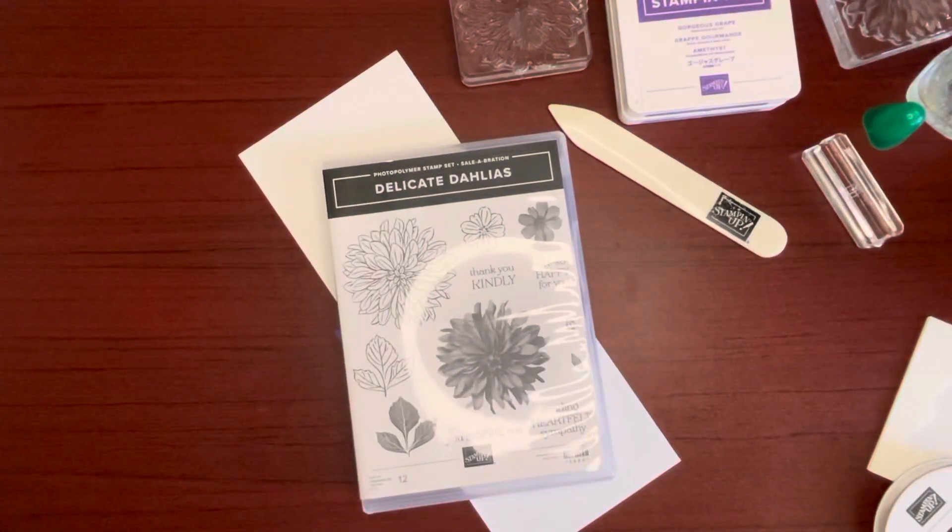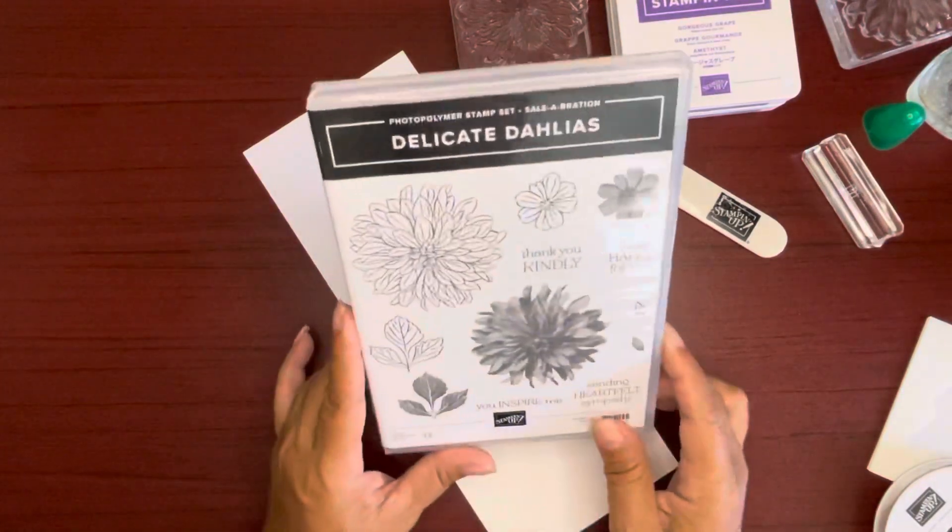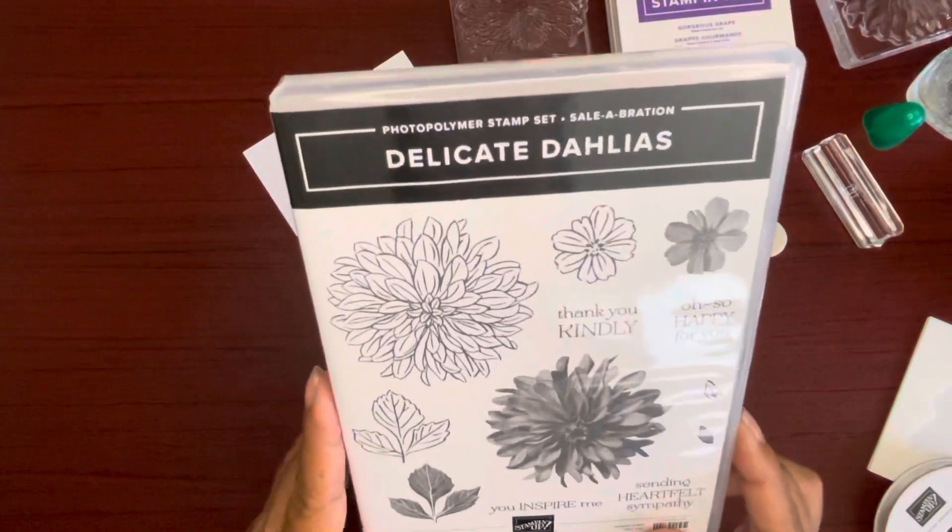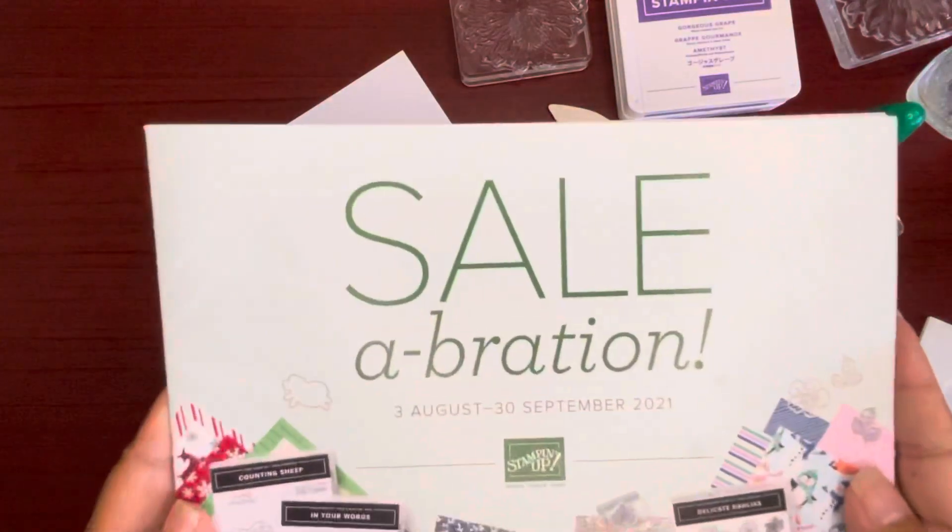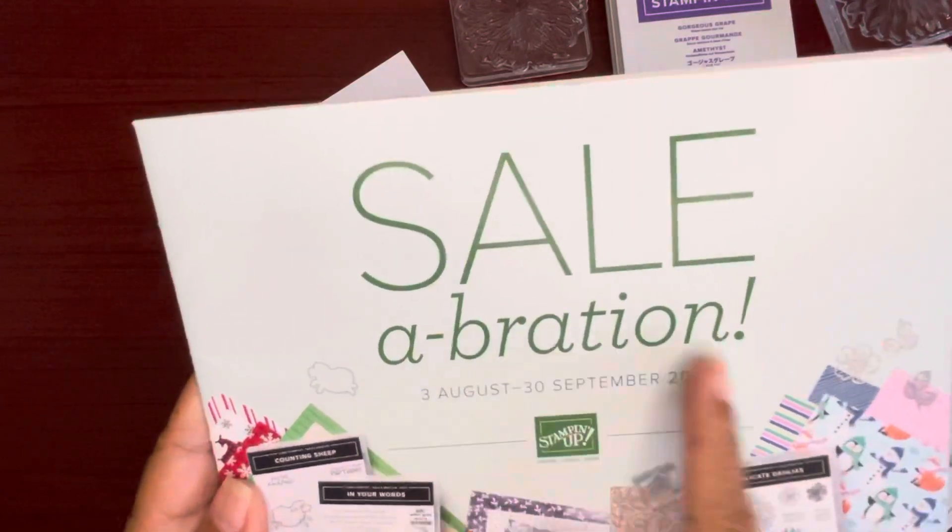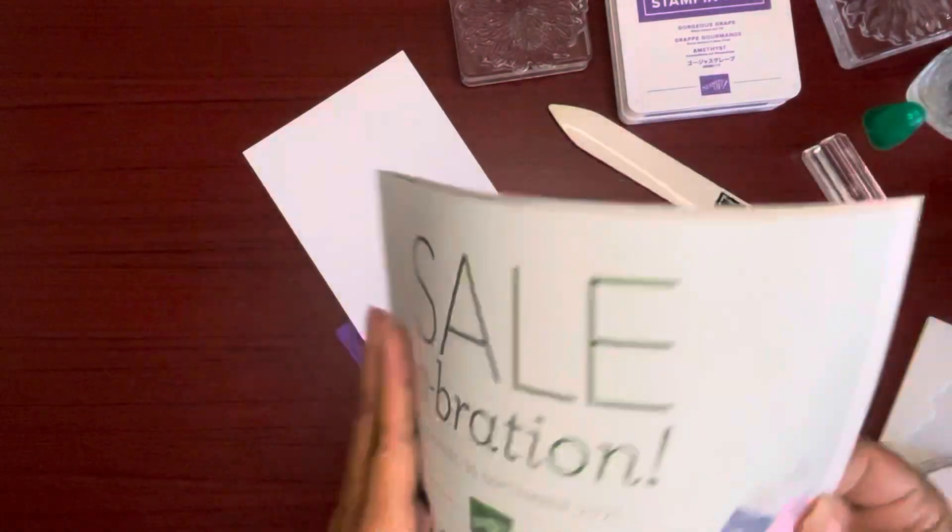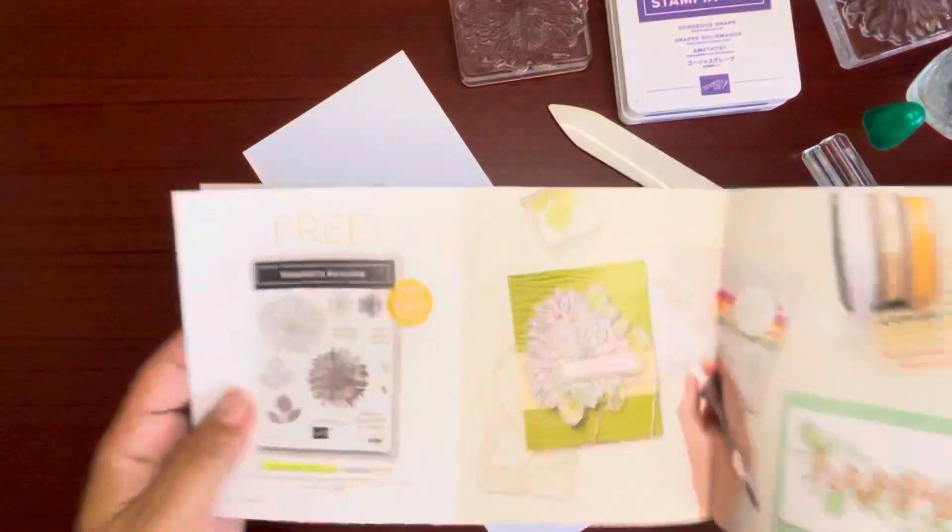Aloha all, Jackie here. Thanks for joining me today in creating a card using Stampin' Up's Delicate Dahlias. It's a celebration photopolymer stamp set from the celebration catalog, August 3 to September 30. It's towards the back of the catalog. Here it is.